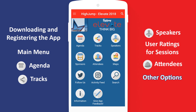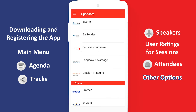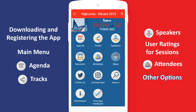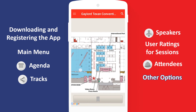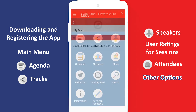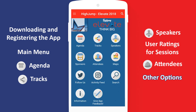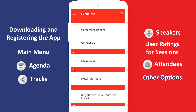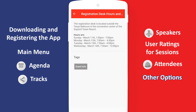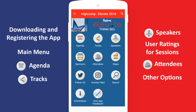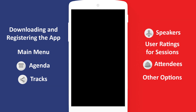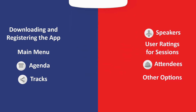The other options in the main menu help you get any kind of information about the event, including details on all the sponsors, a handy map if you're having trouble finding a room, social media links, and general information about the app, event and venue. And that's your crash course on the Elevate app. Download it now and take some time to get familiar with it, so you can make the most out of HighJump Elevate 2018.